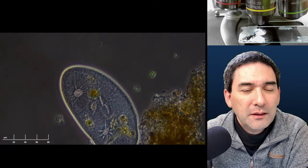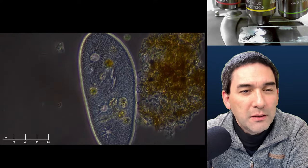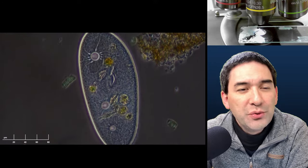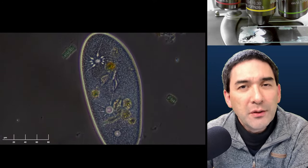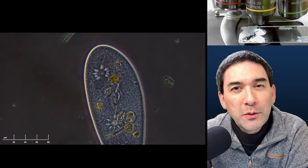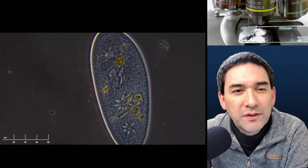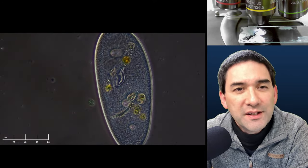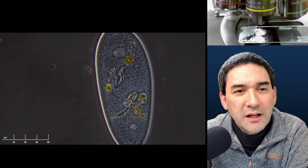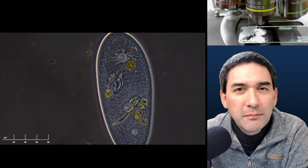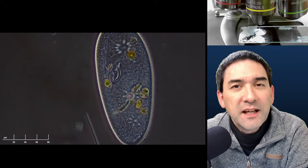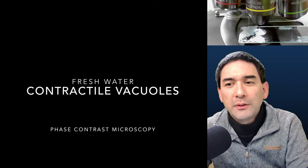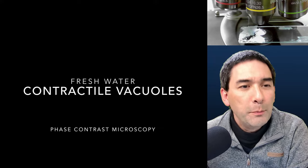Phase contrast microscopy is a big advantage here because it allows you to see structures that are otherwise transparent. Fritz Zernike invented this technique and was awarded the Nobel Prize for it.